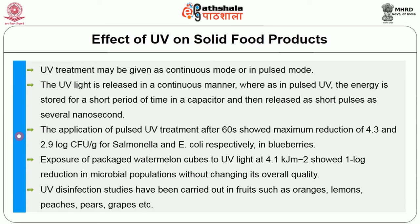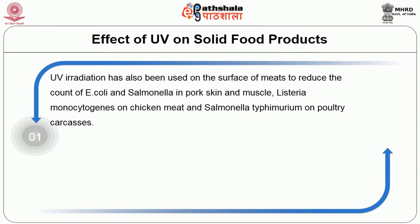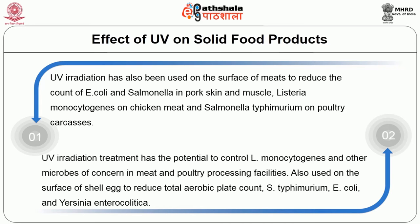UV disinfection studies have been carried out in fruits such as oranges, lemons, peaches, pears, and grapes. UV radiation has also been used on the surface of meats to reduce the count of E. coli and Salmonella in pork skin and muscles, Listeria monocytogenes on chicken meat, and Salmonella typhimurium on poultry carcasses. UV irradiation has the potential to control Listeria monocytogenes and other microbes in meat and poultry processing facilities, and has also been used on the surface of shell eggs to reduce Salmonella typhimurium, E. coli, and Yersinia enterocolitica.